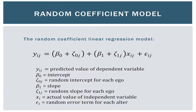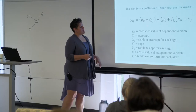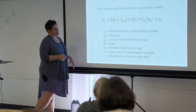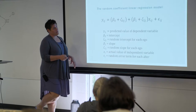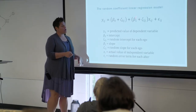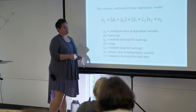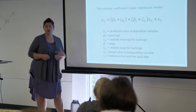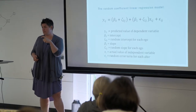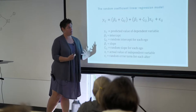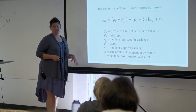Here's what the equation looks like — it's basically the same as before from the random intercept with one additional random parameter. Now we have our overall intercept and our random intercept, so every ego gets their own. And now I have the overall coefficient and a random coefficient, so every ego network gets their own slope bump or slope deficit depending on what's happening with that independent variable in their own network. Then I still have my error term.